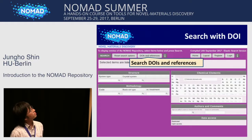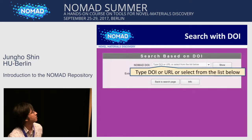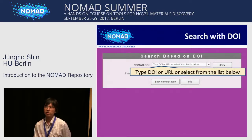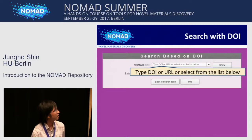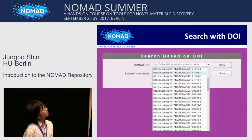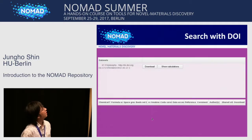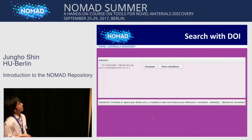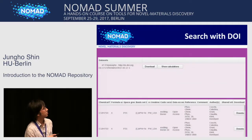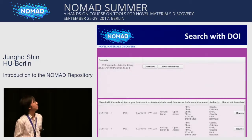If you want to search by DOI, just click this button and you can type the DOI or URL. Or if you get a NOMAD DOI from a journal, enter the DOI here and click the button. You can also click here to see the list of DOIs issued by the NOMAD repository. If you click the 'show' button, you will land on this page and can see the list of calculation entries belonging to that dataset.